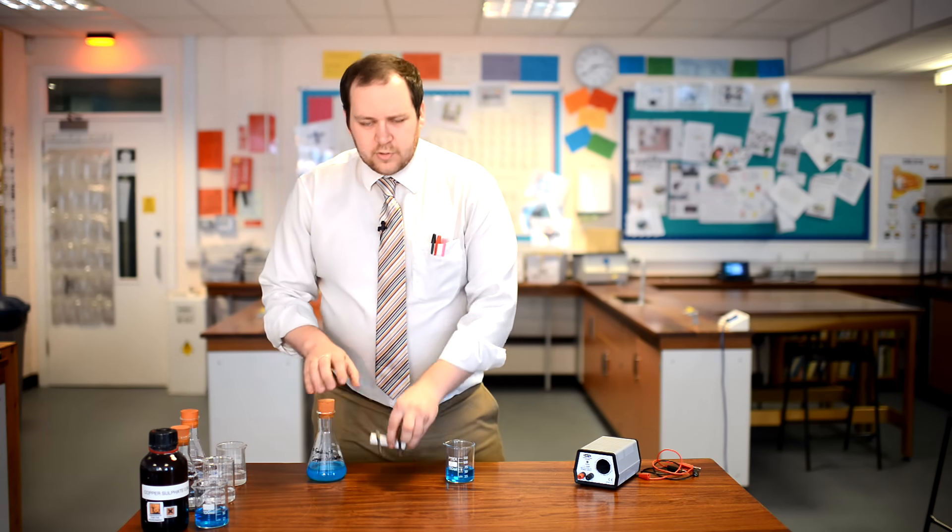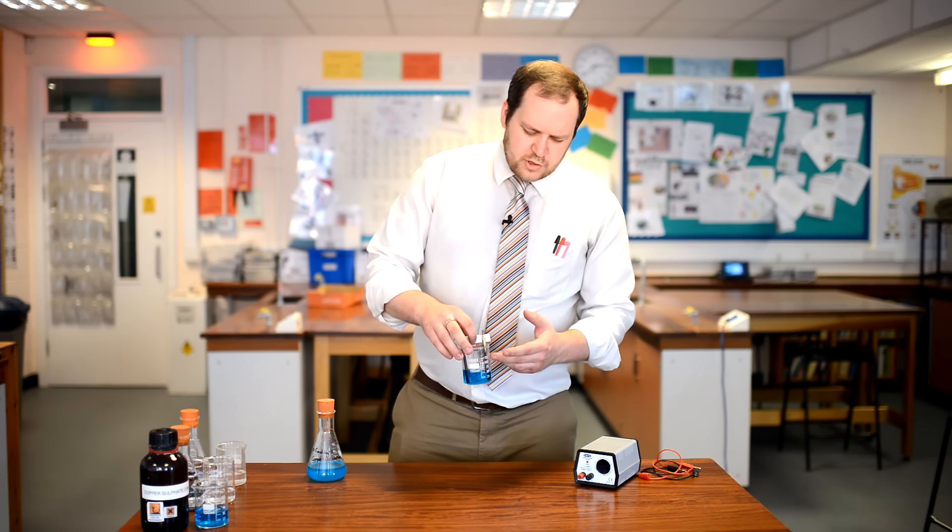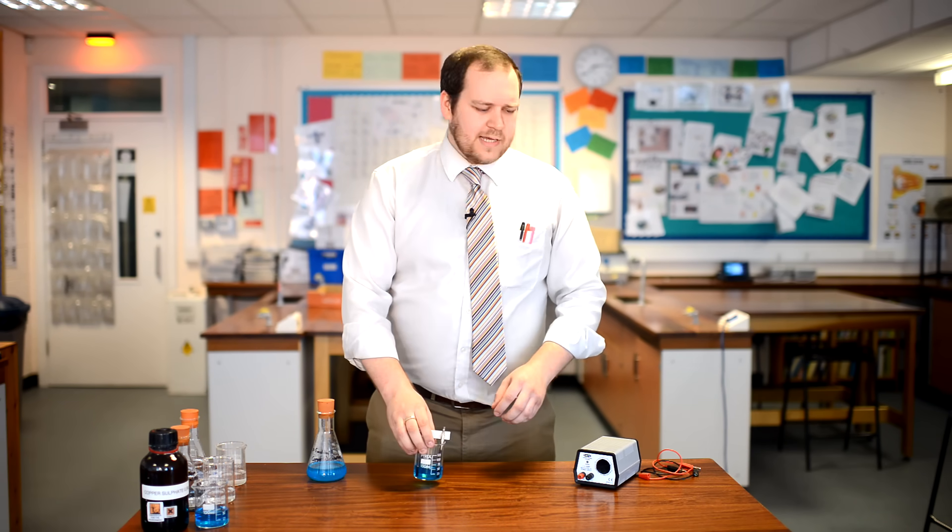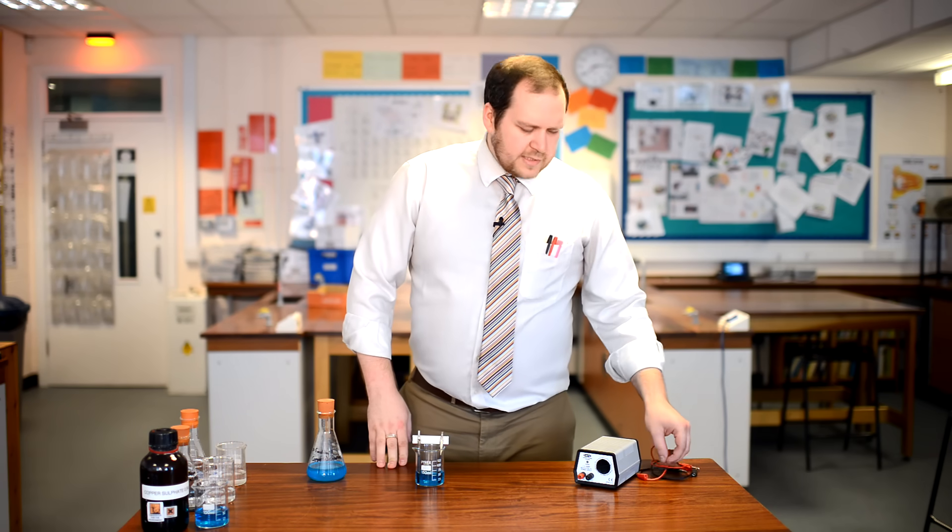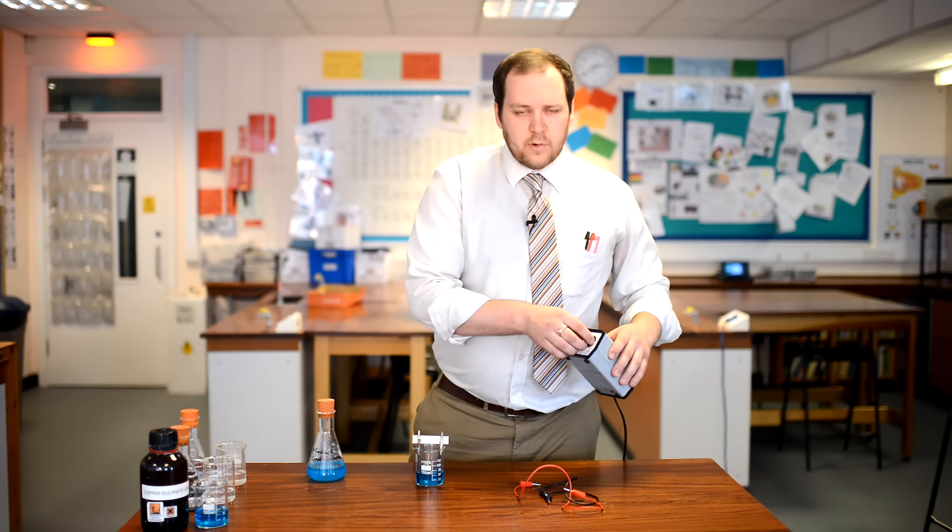Once that's in, you need to make sure that the electrodes are submerged inside the liquid but not too close to the crocodile clips. As you can see, there's plenty of room between the crocodile clips and the top of the liquid. The next thing we're going to do is collect up the power pack. Now we want to go with about 4 volts for this practical.